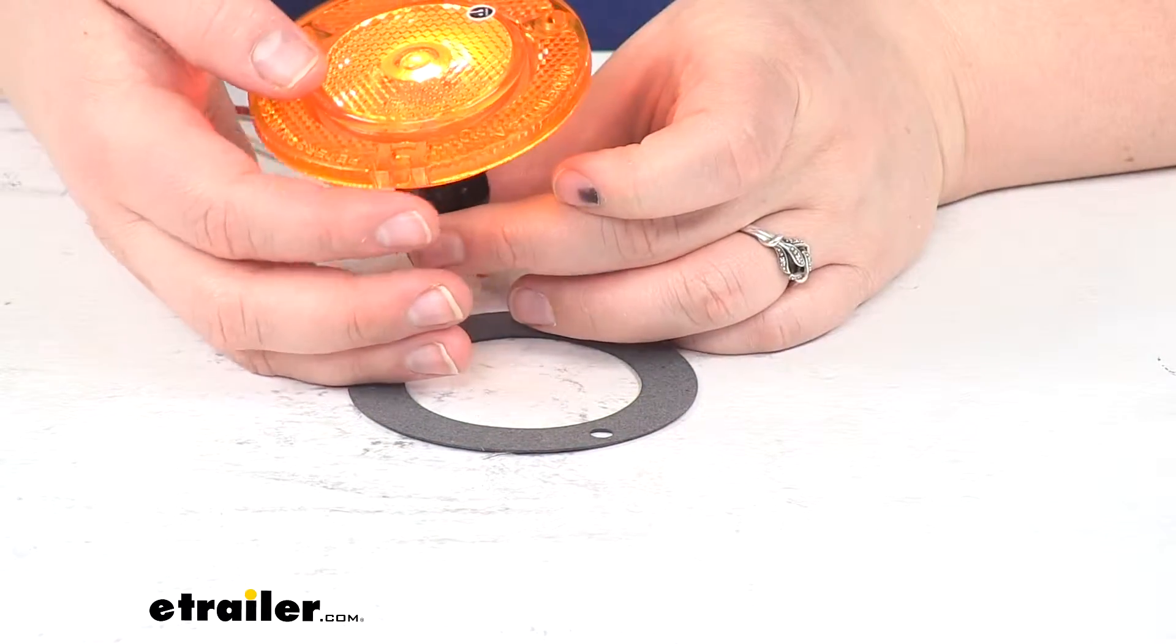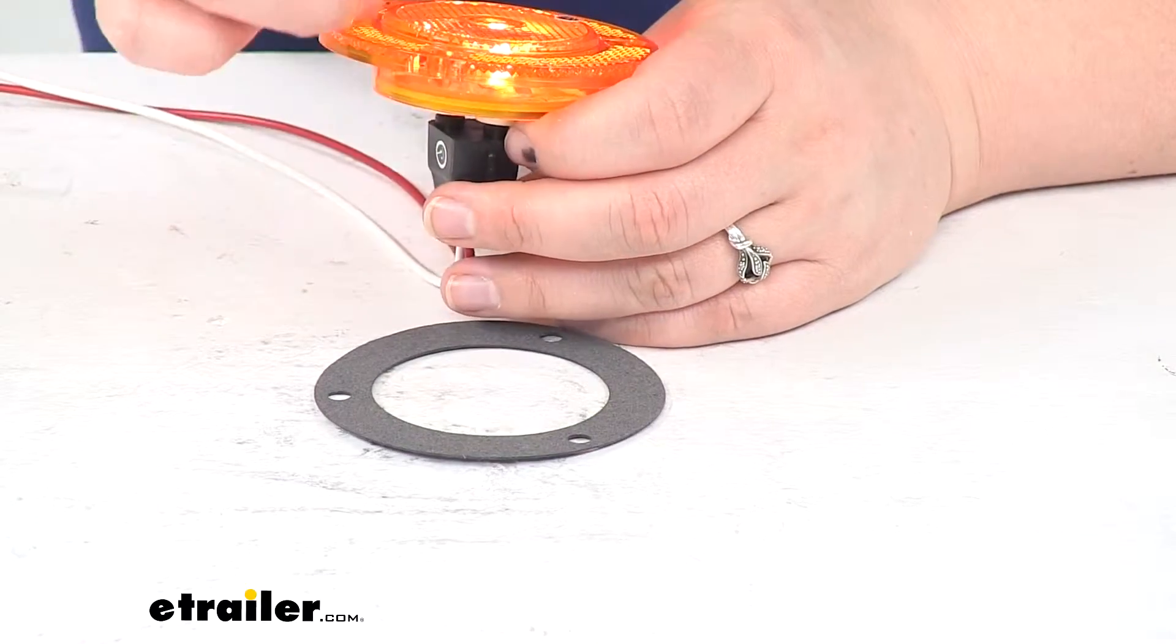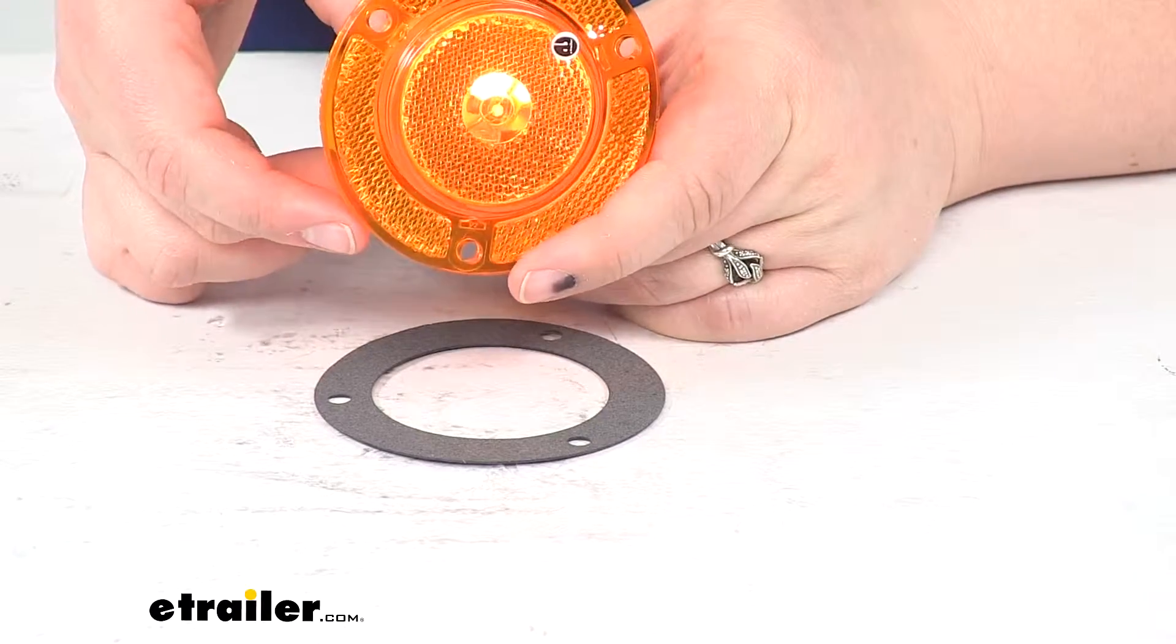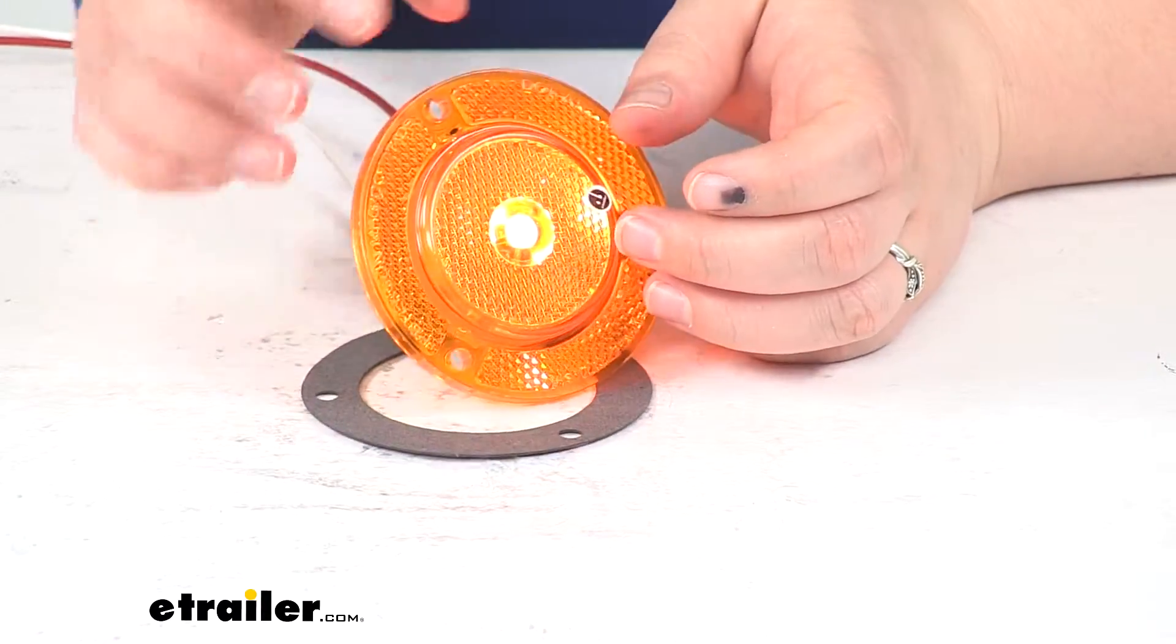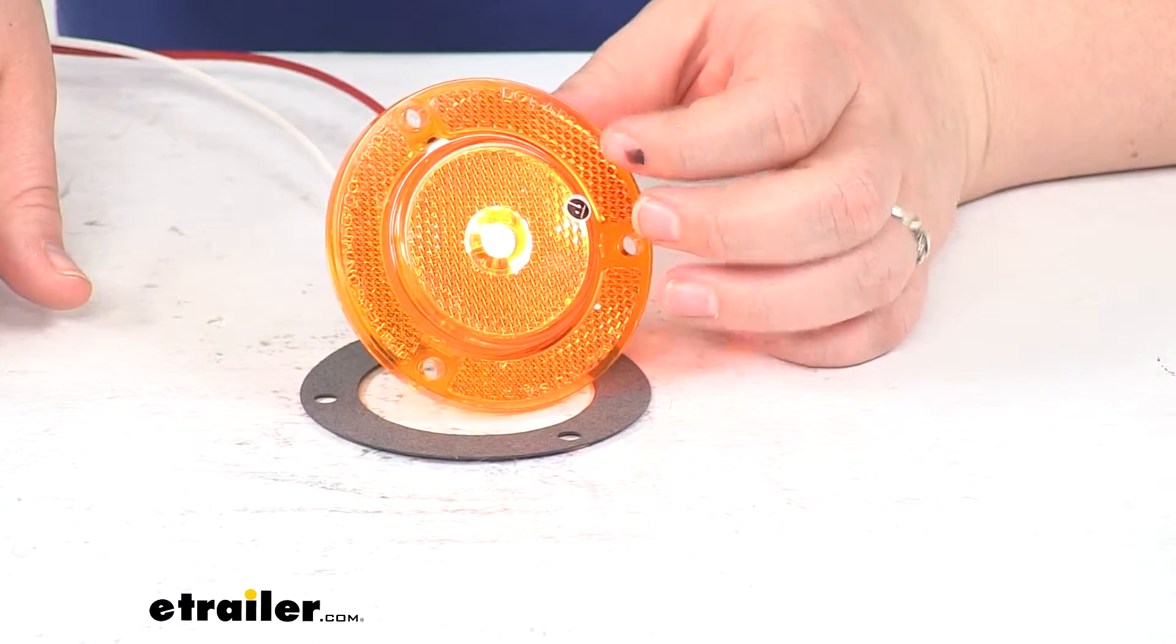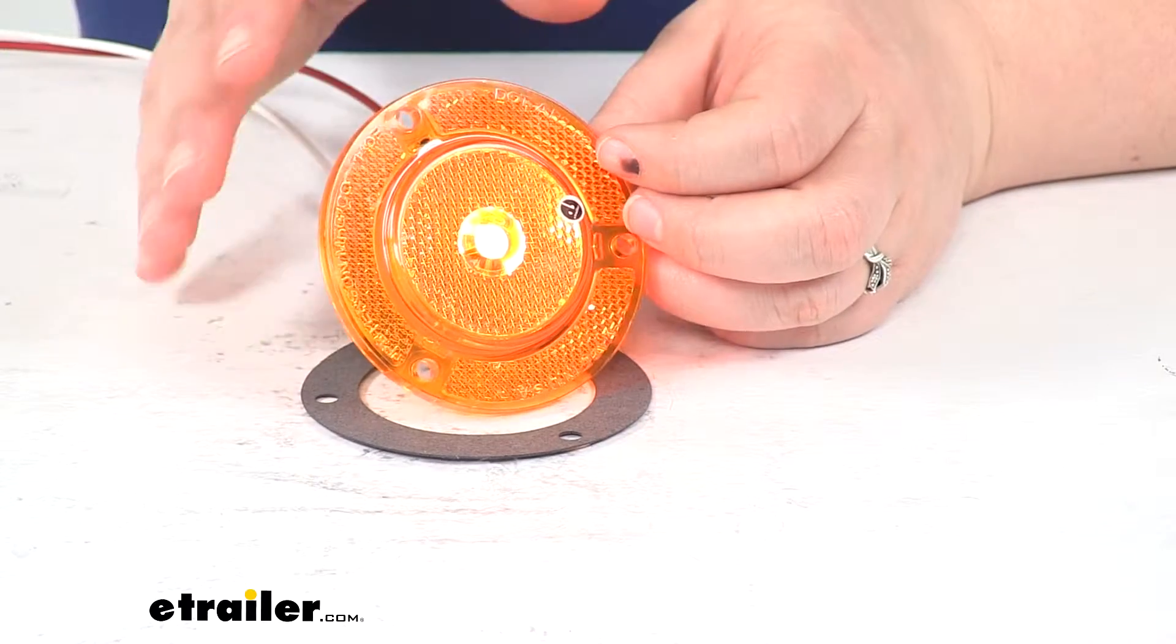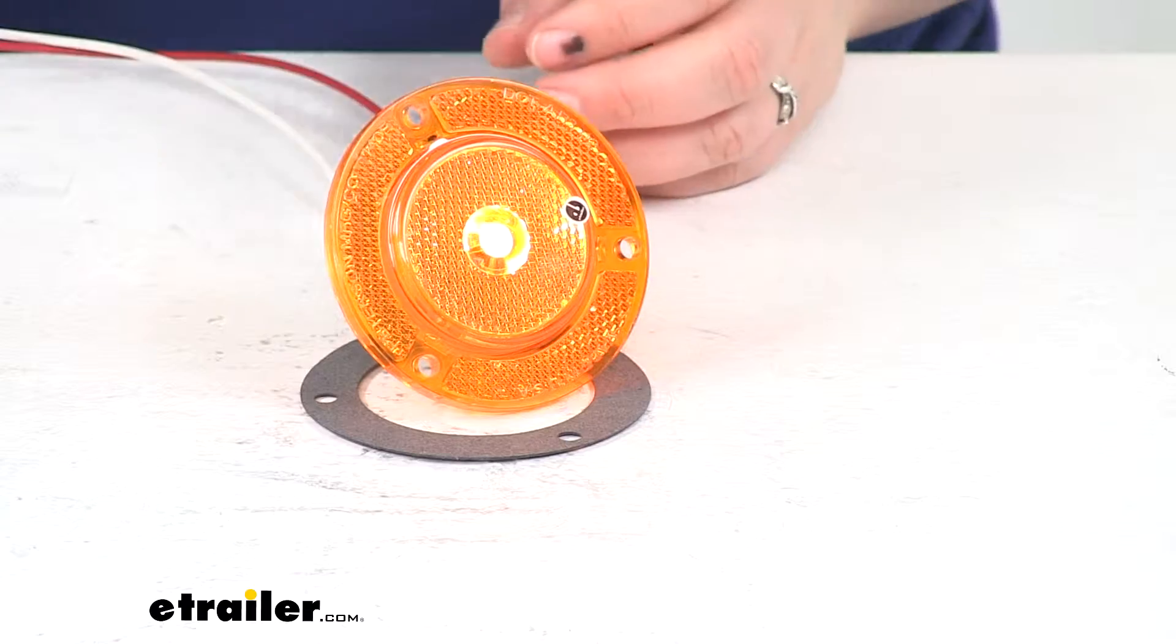So if I turn it like this, we can't really see too much light, but if it starts turning to where it's facing you, that's when you'll start actually being able to see the light better. So that's what makes it a P2 rated light and you need to use it either as a clearance or a side marker light. It can't really be used for both at the same time. So if you want it to be both, you'll have to get two lights.